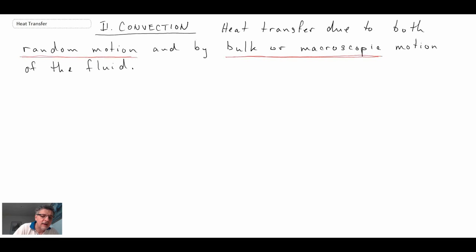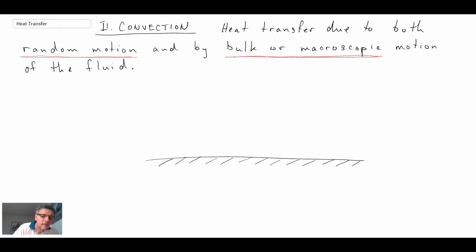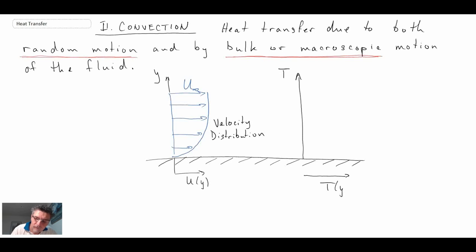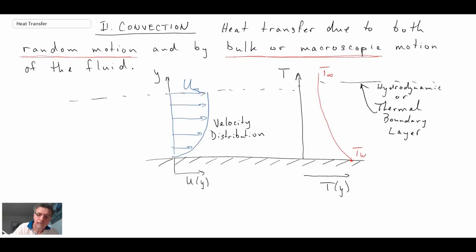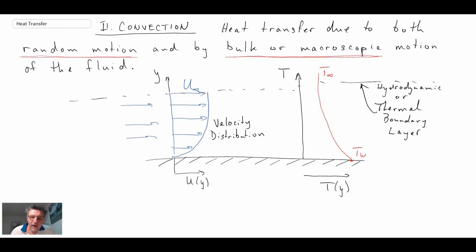We'll take a look at that with a schematic, beginning with the case of a flat plate where we have a fluid flowing over that plate, moving from left to right as shown here. What happens is we have what we call the no-slip condition at the wall, and that's where we have zero velocity along the wall, as shown in the sketch.